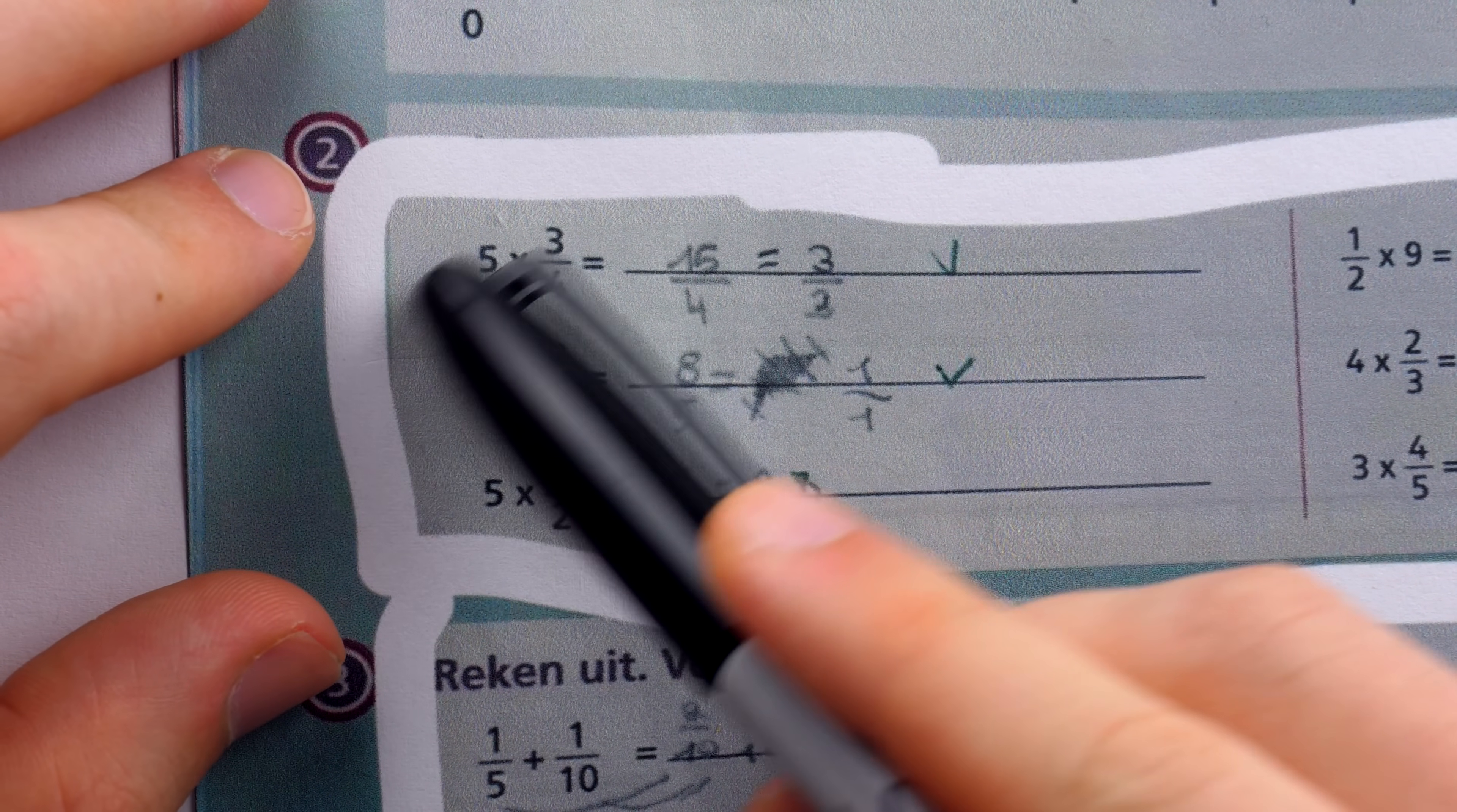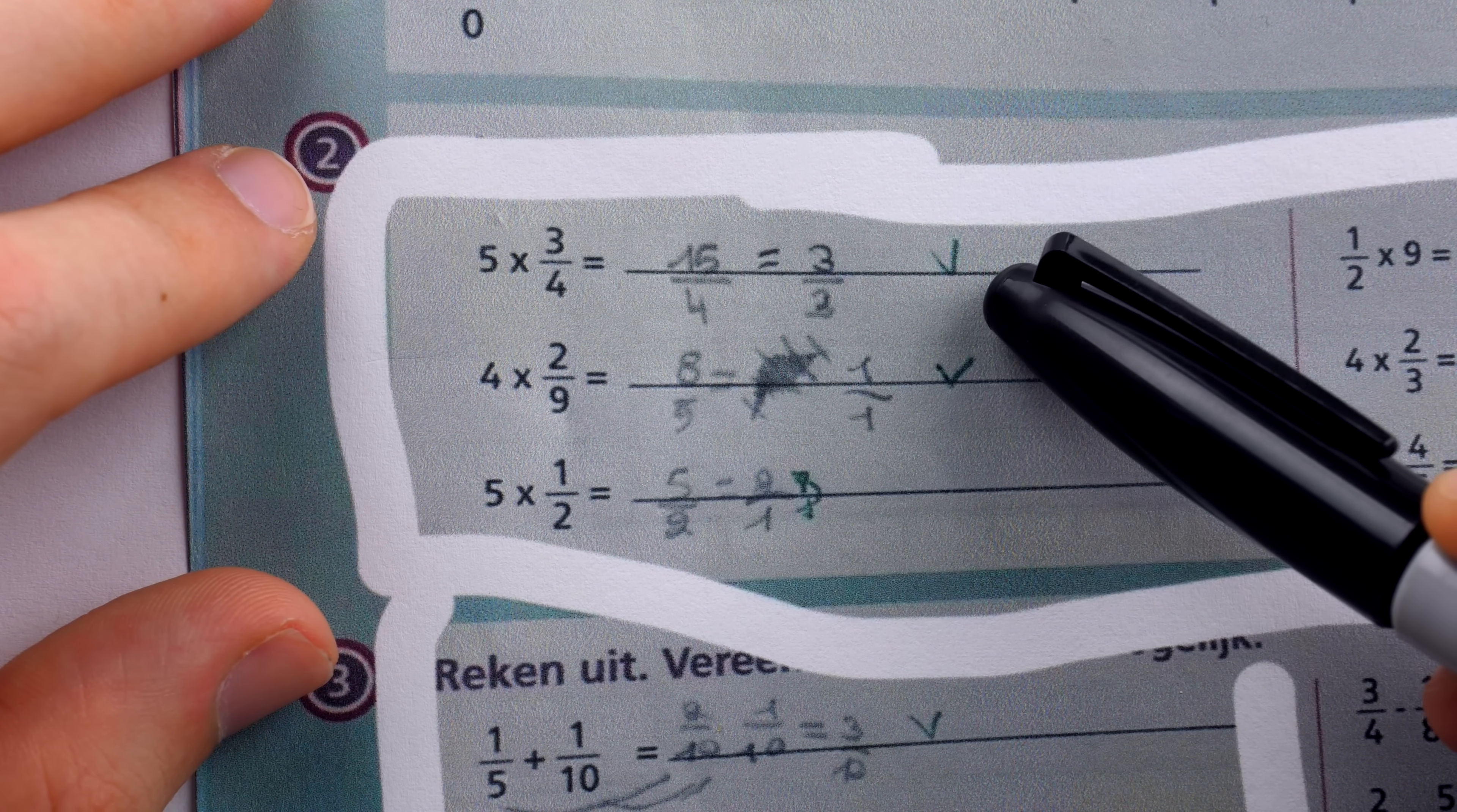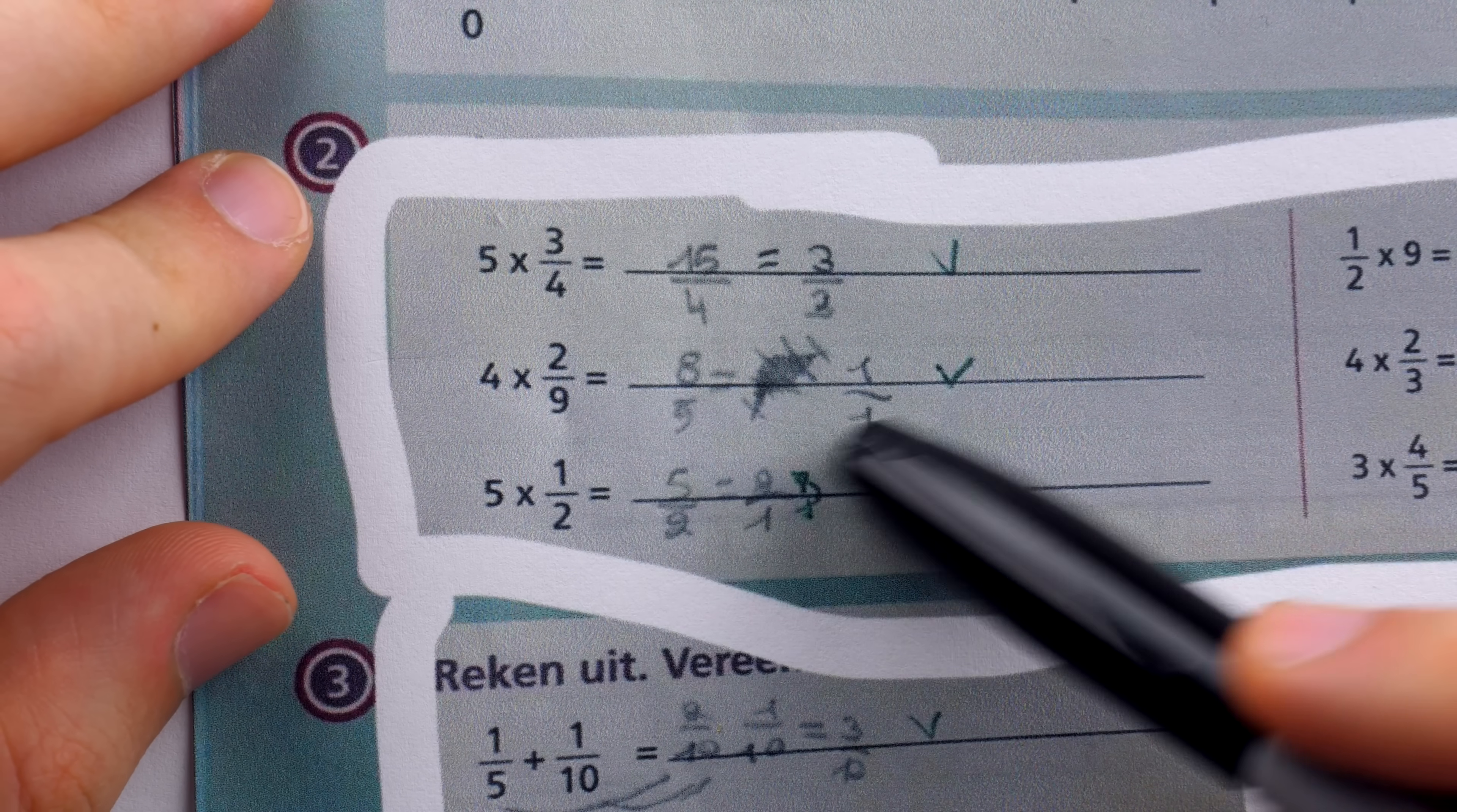The very next problem is 4 times 2 over 9. The student writes 8 over 9, says it equals 1 over 1, and the teacher marks that correct. Of course, 8 over 9 is not 1 over 1. So, what's correct here?